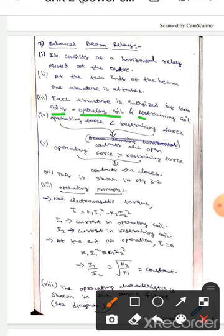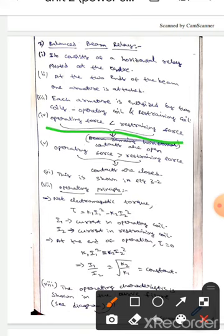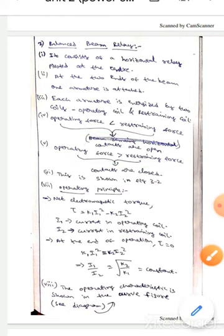If operating force is less than restraining force, then the contacts are open, whereas if operating force is greater than restraining force, then contacts are closed. This is shown in figure 3.2.